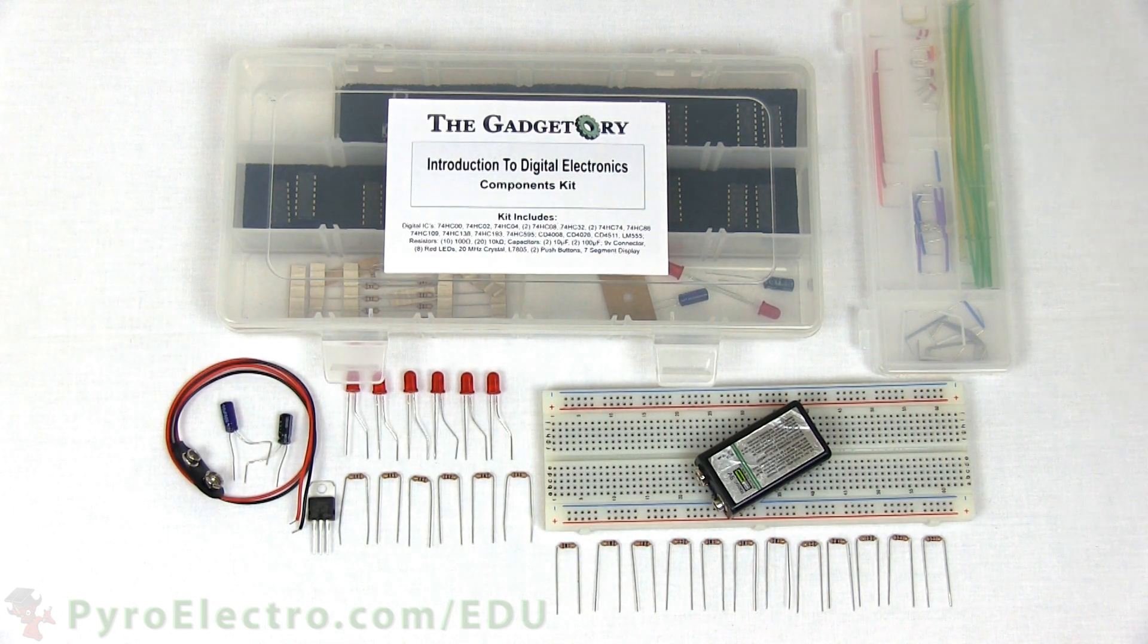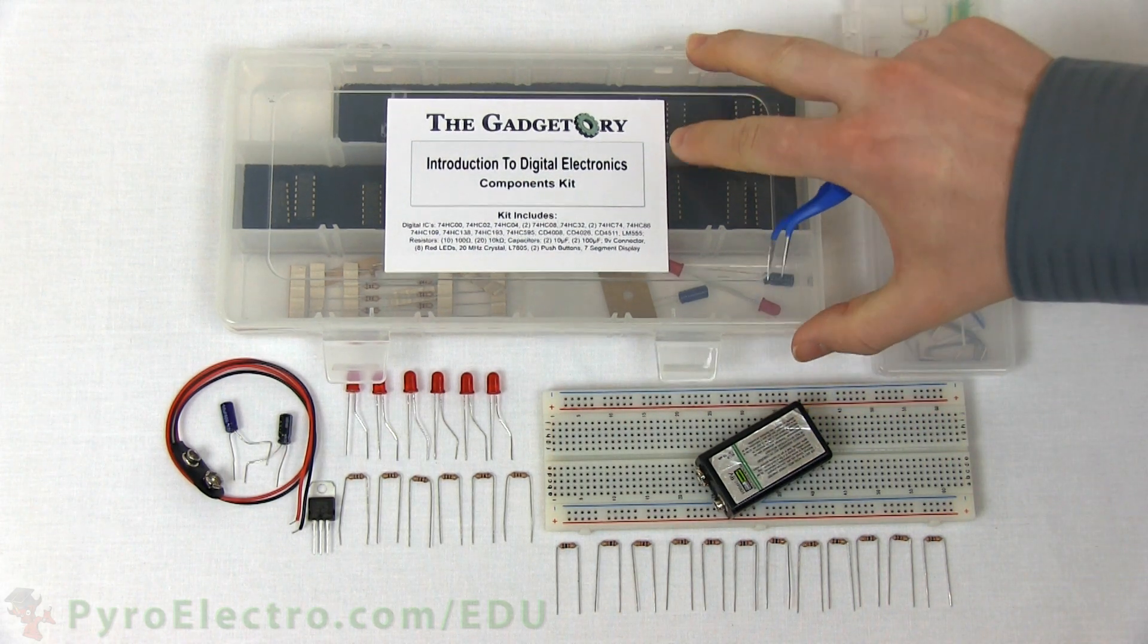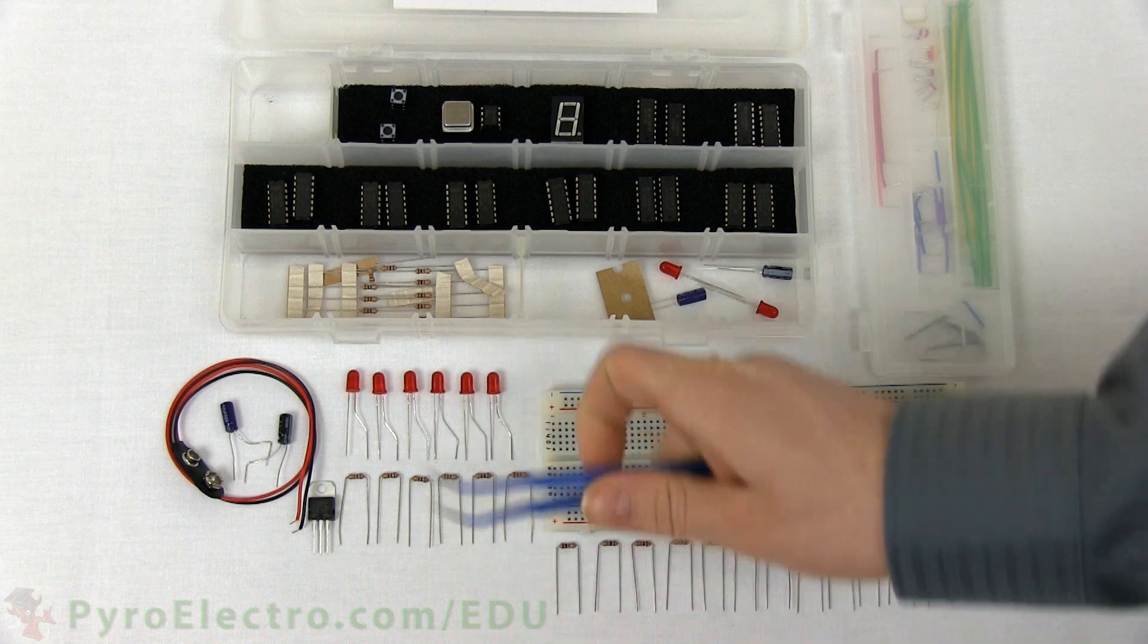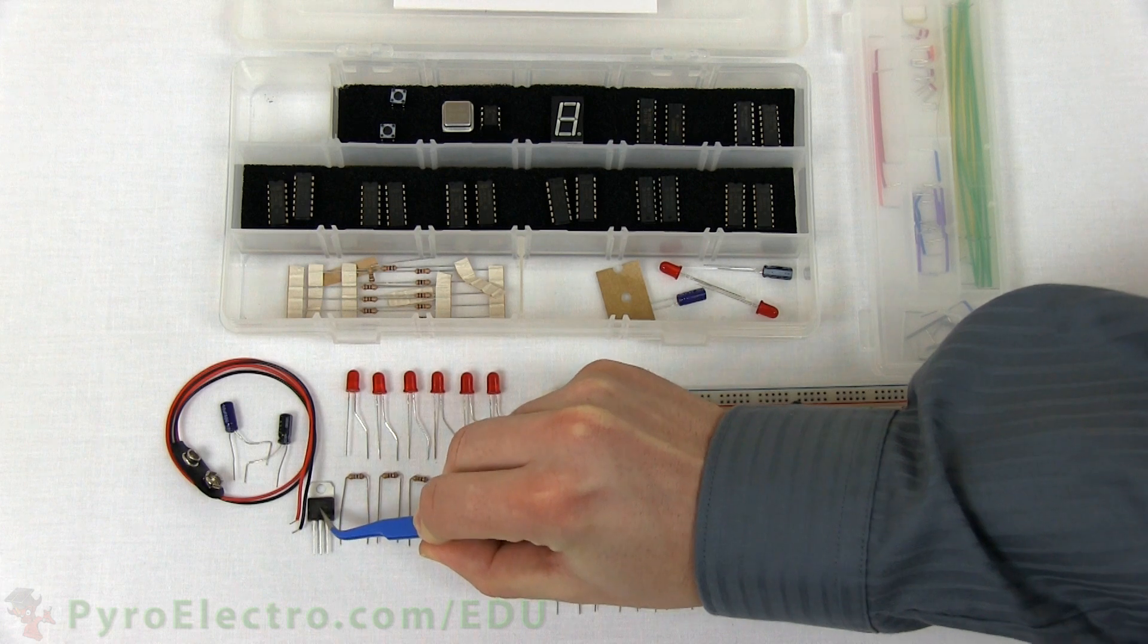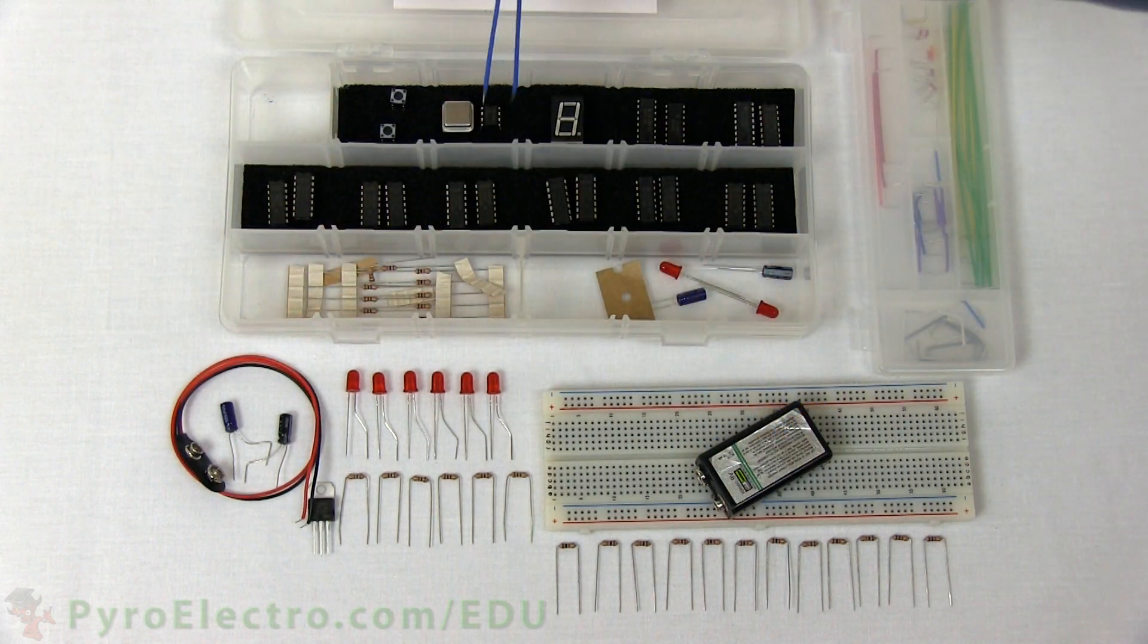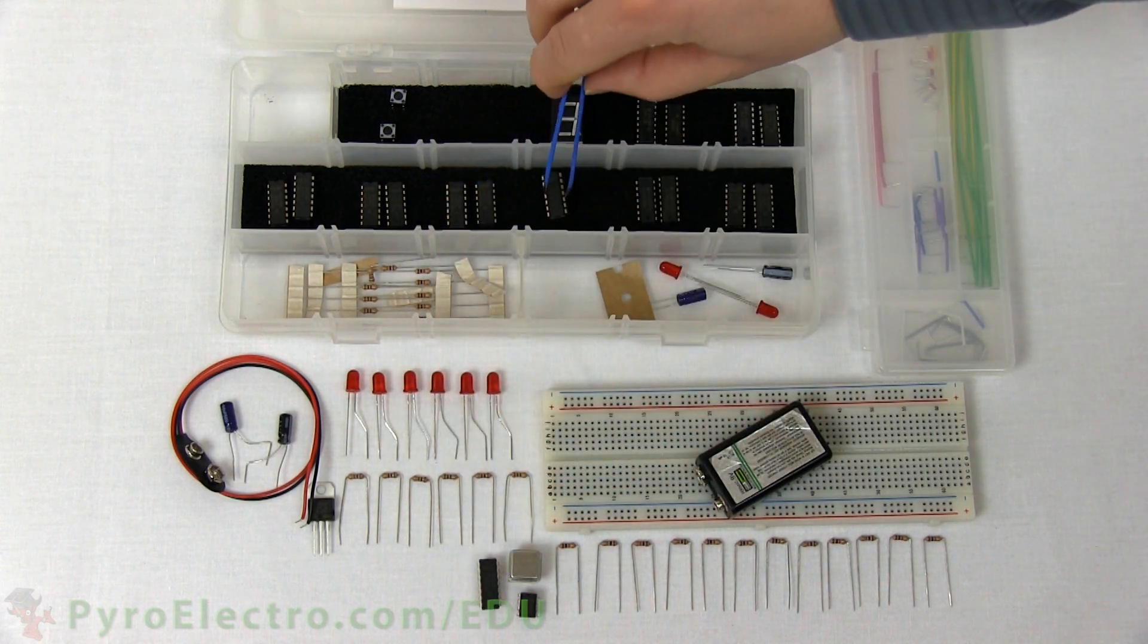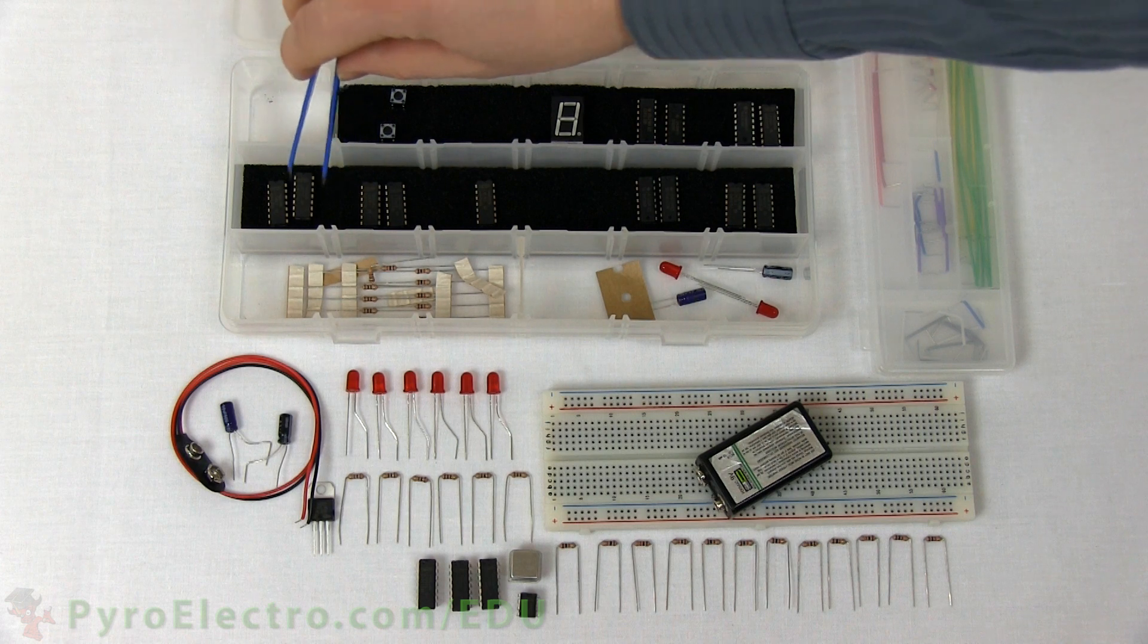The parts we'll need for this experiment are the jumper wire kit, a breadboard, a 9 volt battery, and from the components kit, you'll need 12 10 kilo ohm resistors, 6 100 ohm resistors, 6 red LEDs, a 7805 5 volt regulator, a 10 and 100 microfarad capacitor, a 9 volt battery connector, a 555 timer, and a crystal oscillator if you want to try it out, two 7474 D flip-flop ICs, a 7408 AND gate IC, and a 7402 NOR gate IC.